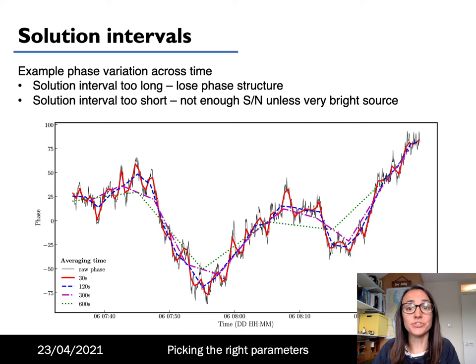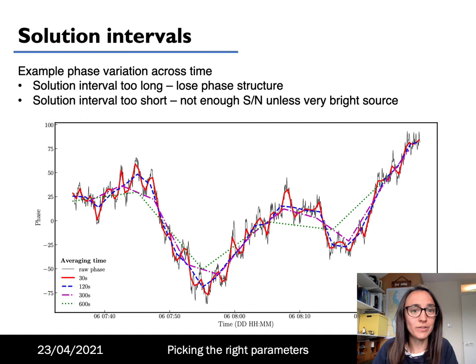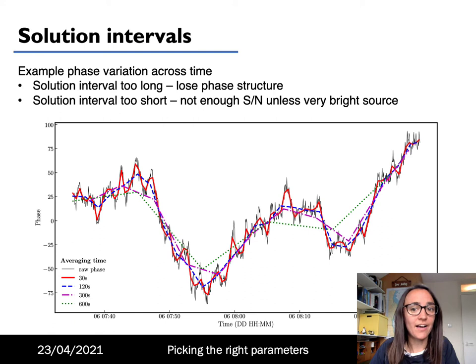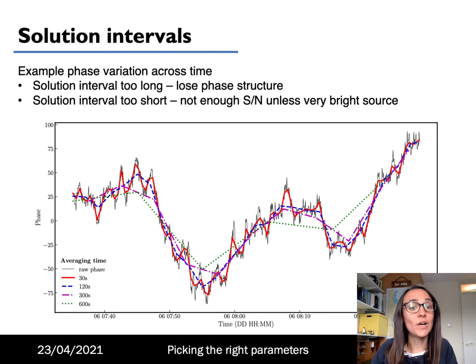When calibrating, you need to choose your solution interval for phase calibration carefully — this can have quite a big impact on the results. In general, you want the longest solution interval that you can have to increase signal-to-noise without losing phase structure. If your solution interval is too long, you will lose that phase structure; if it's too short, you won't have a large enough signal-to-noise unless your phase calibrator is very bright. This plot shows phase against time: the raw phase is shown in black, and phases with different averaging times are shown by different lines. You can see that if the averaging time is too long — for example 600 seconds (green dotted) or 300 seconds (magenta dash-dot) — we lose quite a lot of structure in the signal.